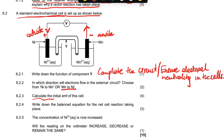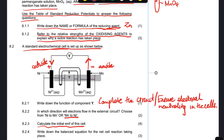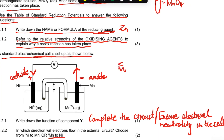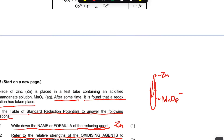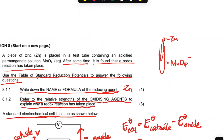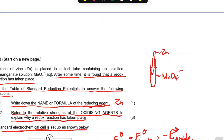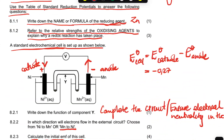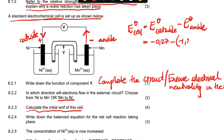Question 8.2.3: calculate the EMF of the cell. The formula is: E°cell = E°cathode − E°anode. The cathode is nickel. So E°cell = (−0.27) − (−1.18) = −0.27 + 1.18 = +0.91 V. The EMF of the cell is +0.91 volts.